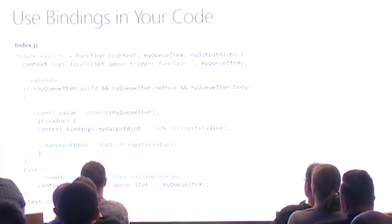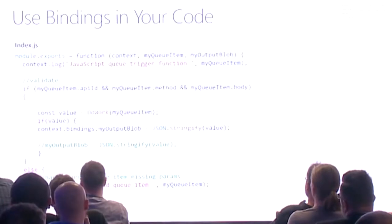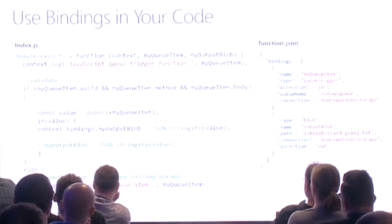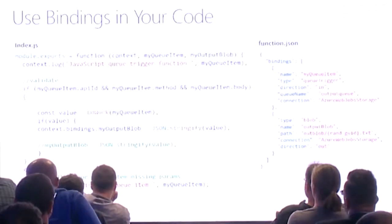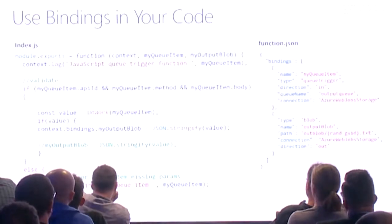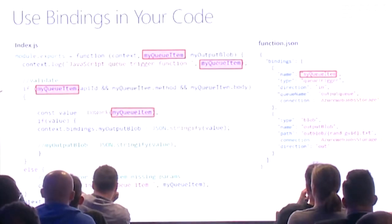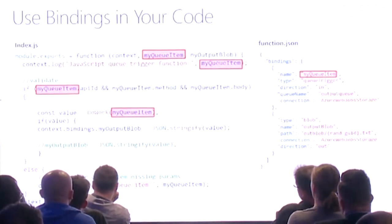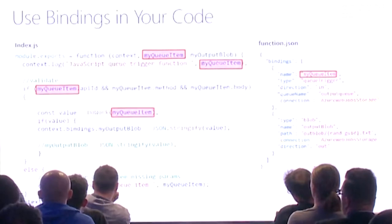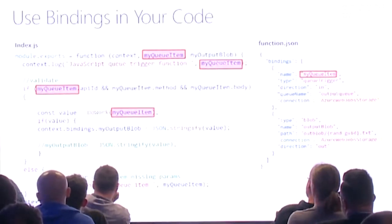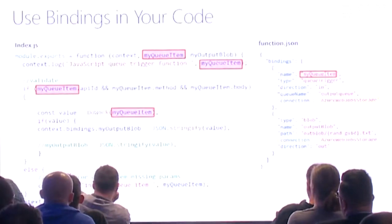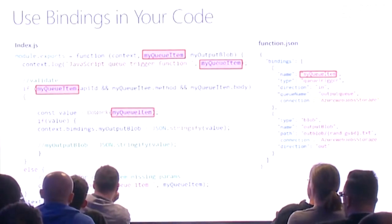Here's the Node.js version — very similar. The function.json is exactly the same to set up input and output bindings and triggers. In this case it's a queue trigger waiting for a message in the output queue. Once the message comes in, I can query 'queueItem' and check fields like 'apiId.' It's all done for me. All these examples are on our GitHub page — about 75 different Azure Function examples.